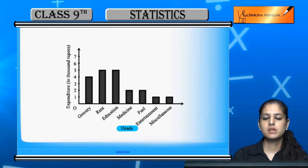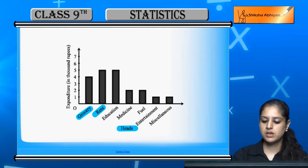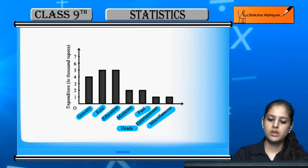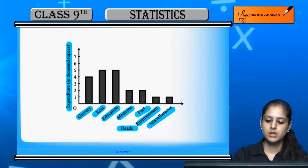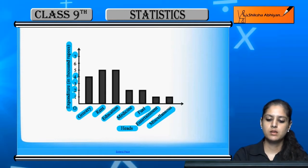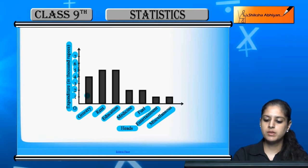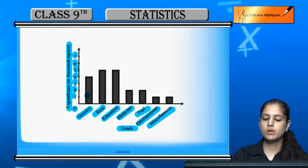The heads we have are: grocery, rent, education, medicine, fuel, entertainment, and miscellaneous. On the y-axis, we have taken the expenditure in units of 1,000 rupees, from 0 to 7. You can see that all bars are of equal width with equal spacing, but the height of each bar is different.